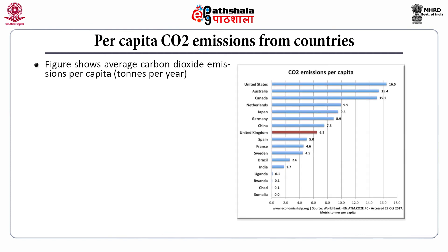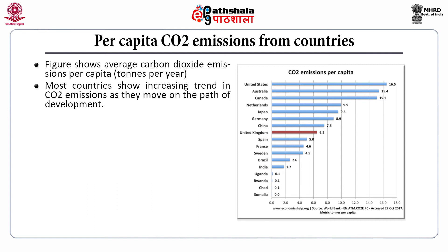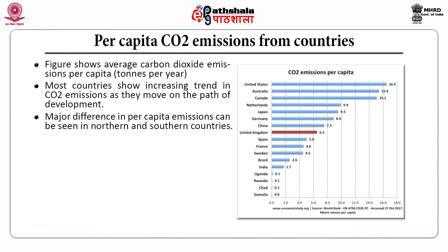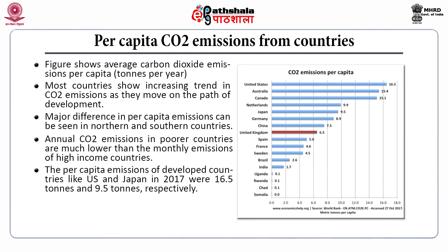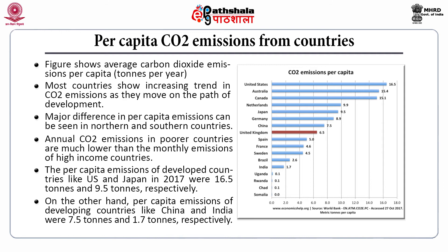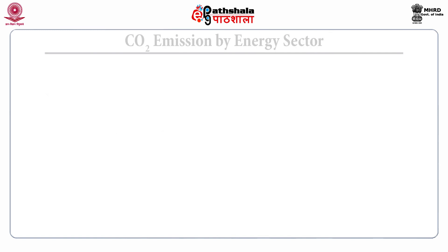This figure shows average carbon dioxide emission per capita — in tonnes per person per year. Most countries show an increasing trend in carbon dioxide emission as they move on the path of development. The major difference in per capita emission can be seen between northern and southern countries. The annual carbon dioxide emission in poorer countries is much lower than the monthly emission of high-income countries. The per capita emissions of developed countries like the United States and Japan in 2017 were 16.5 tons and 9.5 tons respectively, whereas per capita emissions of developing countries like China and India were 7.5 tons and 1.7 tons respectively.